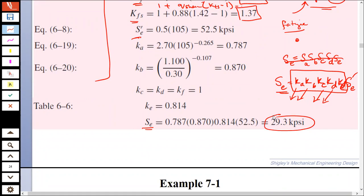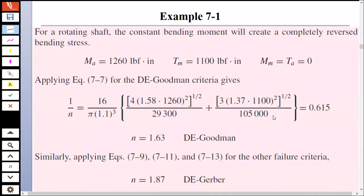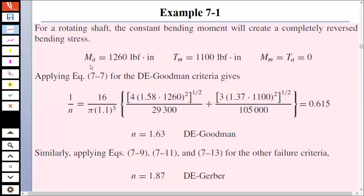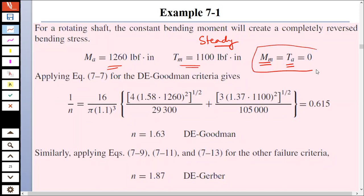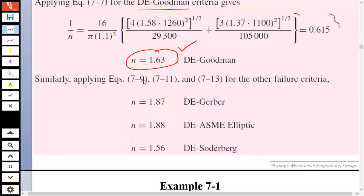From the given data, we have a bending moment and a torque, and it's stated that the torsion is steady. When the loading is steady, that means your mean alternating moment Mm and alternating torque Ta are zero. Therefore, applying the modified Goodman equation, 1/n equals the right-hand side expression, plug in those values and you get your factor of safety. Similarly, calculate the factor of safety using the Gerber, ASME, and Soderberg criteria.